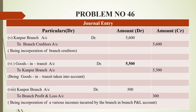The last one is the credit side of the profit and loss account. Usually most problems have gross profit, but in this problem we have discount received. So we have to record this journal entry: branch account debited to branch profit and loss account. That is 300 rupees. This completes the journal entries for incorporation of branches.